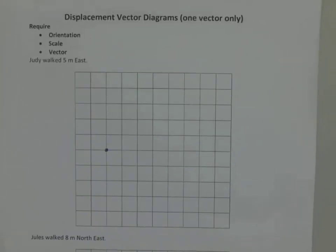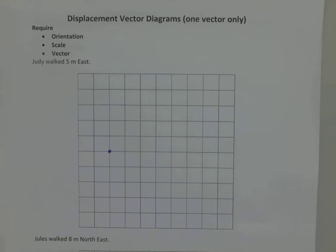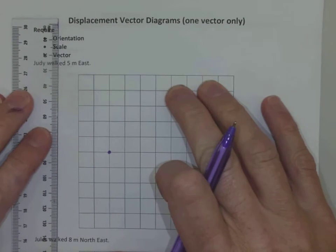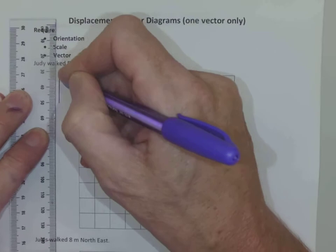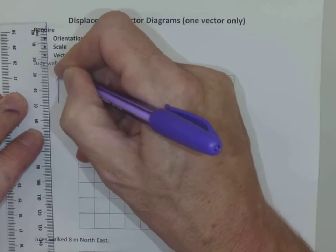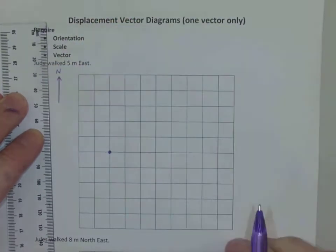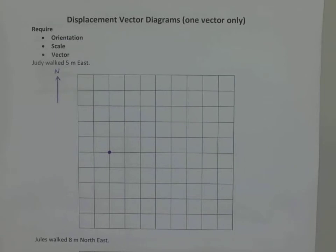So we'll start with Judy. Now for the drawing of a displacement vector we want to have an orientation, a scale, and then draw in the vector. So we'll start off with our orientation. We need to identify a north direction. Probably the easiest way is to draw a simple arrow labeled north. Now if this is north then obviously down is south, to the right is east, and to the left is west.